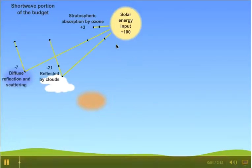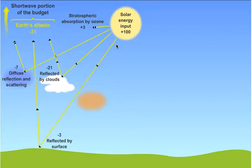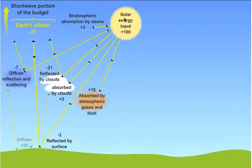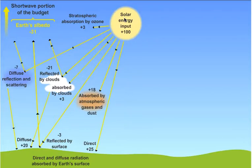Let's first look at the shortwave part of the radiation budget. We start out with 100 parts of solar energy. Let's see what happens to those 100 parts within the atmosphere and the Earth's surface.